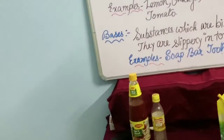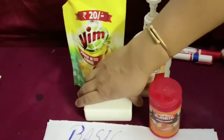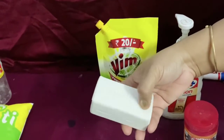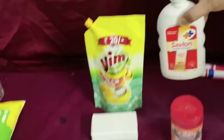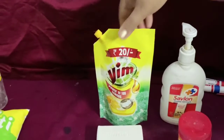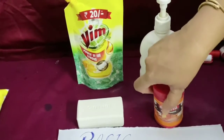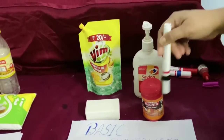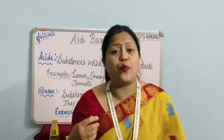So let's check out. Here you see, children, these are basic substances. I have a bar — this is soap. When I am touching it, I am finding it very slippery. This is a soap bar. You can also see a hand wash, a dish wash, and baking powder. All these are basic in nature — they contain the base. When we touch soap with wet hands, we will find it very slippery.